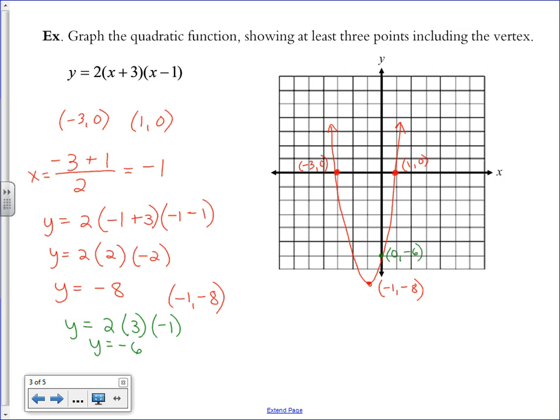You may also be asked to label your axis of symmetry. So I would like to draw that on here, go right through the vertex, and I label it X equals negative 1, the X coordinate of the vertex.